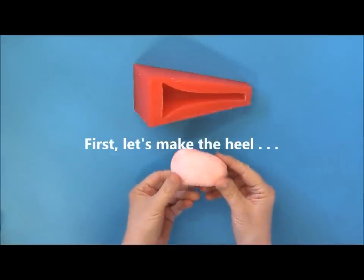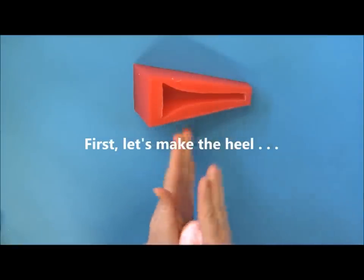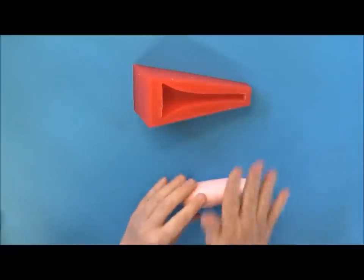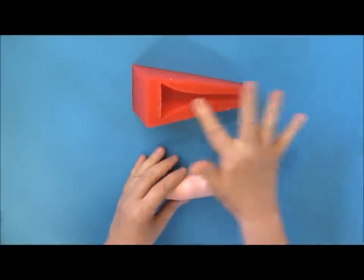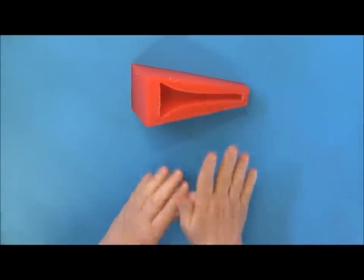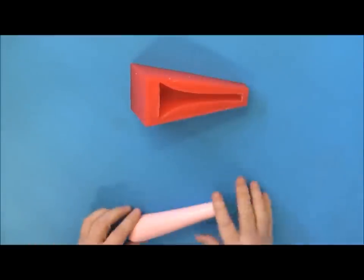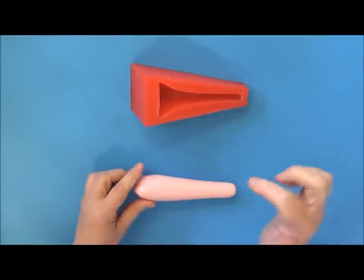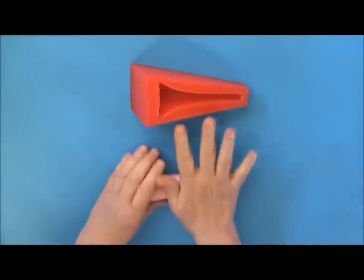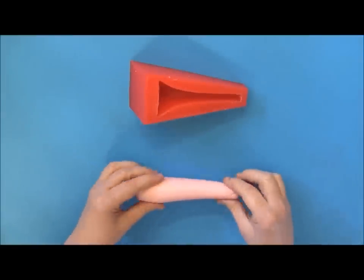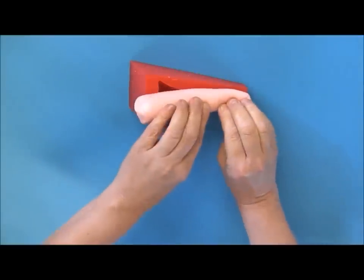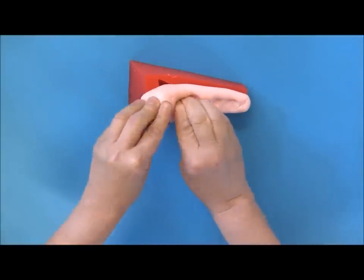I have some gum paste here that I've colored pink and I'm going to make a pink high heel today. First, I'm just going to roll it out and make one end a little thinner so it conforms to the shape of the high heel mold. You want the smoothest section to go down into the mold because you don't want any creases in your high heel. I'm going to make sure I've got my smoothest pieces going down and then I'm just going to press it down into the mold.